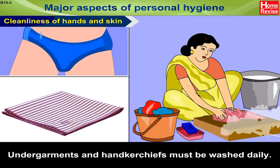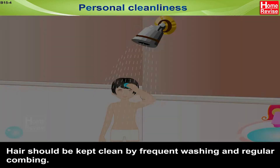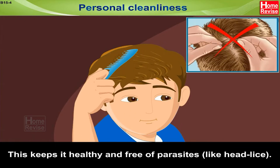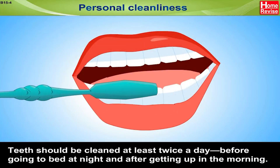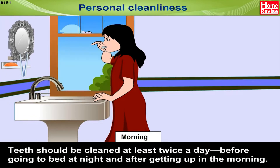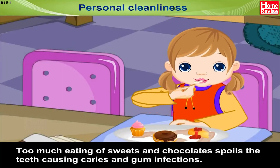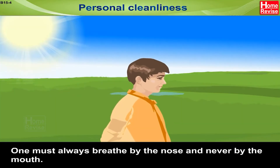Undergarments and handkerchiefs must be washed daily. Hair should be kept clean by frequent washing and regular combing; this keeps it healthy and free of parasites like head lice. Teeth should be cleaned at least twice a day — before going to bed at night and after getting up in the morning. The mouth should be washed after every meal. Too much eating of sweets and chocolates spoils the teeth, causing caries and gum infections. One must always breathe by the nose and never by the mouth.